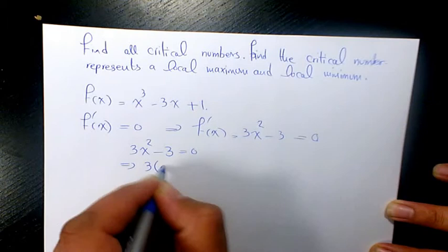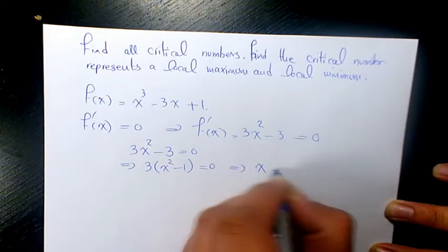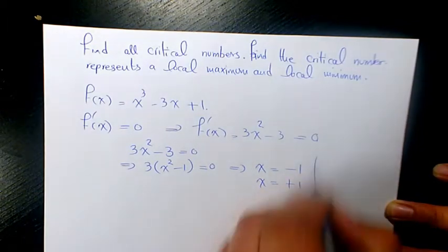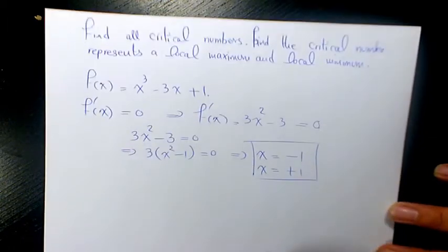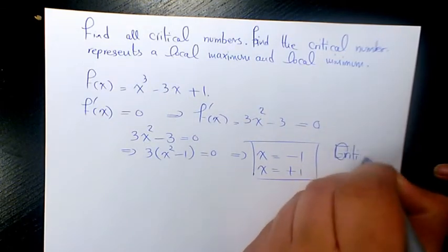When you factor out 3, it's going to be x squared minus 1 equals 0. So x will be either equals to negative 1 or equals to positive 1. So we have these two critical points or extreme points.